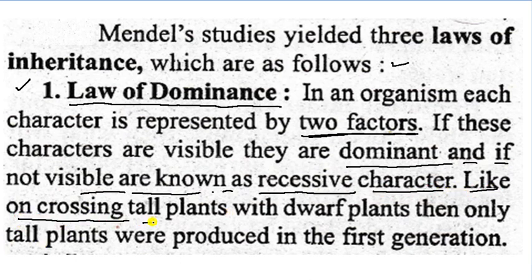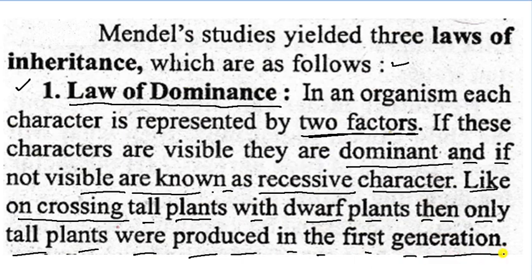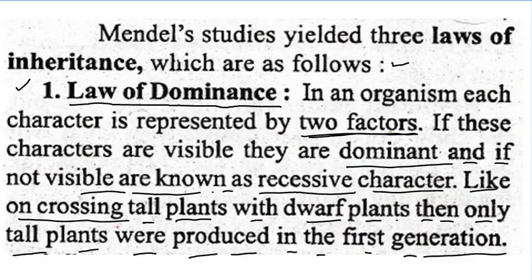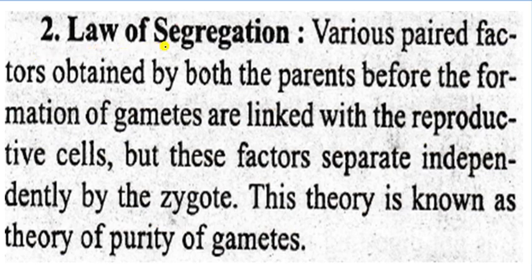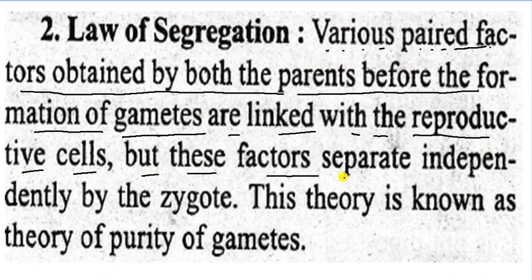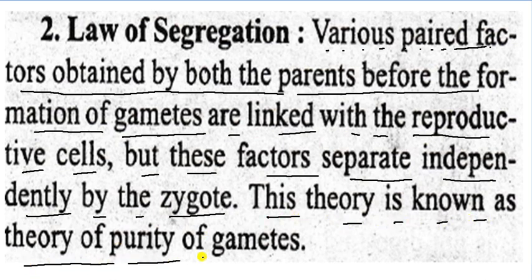For example, on crossing tall plants with dwarf plants, only tall plants were produced in the first generation. The second law is the law of segregation. Various paired factors are obtained from both parents before the formation of gametes and linked with reproductive cells, but these factors separate independently in the zygotes. This theory is known as the theory of purity of gametes.